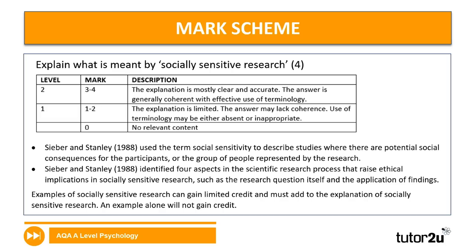Let's have a look at the mark scheme. Because it's four marks, this is marked in levels. Sieber and Stanley used this term originally in 1988, and they describe what it means when studies have a potential social consequence not just for participants, but for the group of people represented by the research. Various ethical implications can be raised — such as how findings are going to be used and the research question itself. You can model this on a particular topic; quite a nice example from paper one is Bowlby's monotropic theory.